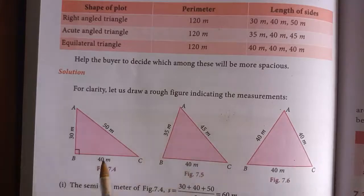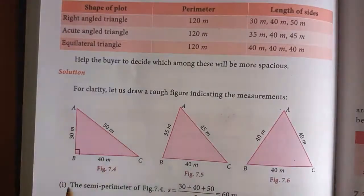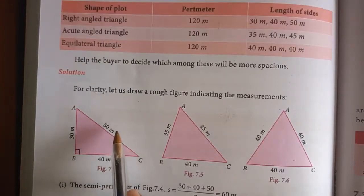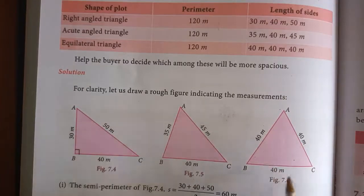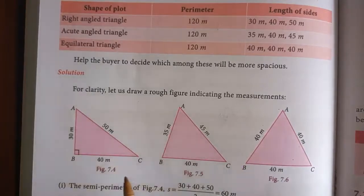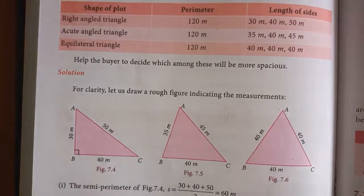The three figures are: first, a right-angled triangle (right angle at B) with sides 30 m, 40 m, 50 m; second, an acute-angled triangle with sides 35 m, 40 m, 45 m; and third, an equilateral triangle with all sides A = B = C = 40 m. For each triangle, we will first find the semi-perimeter and then the area. By comparing the three areas, we can determine which plot is more spacious.